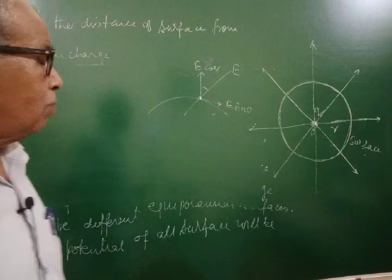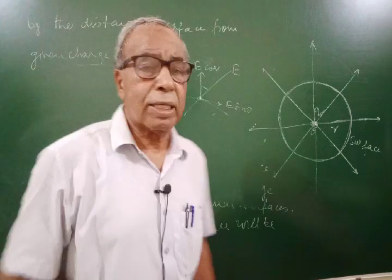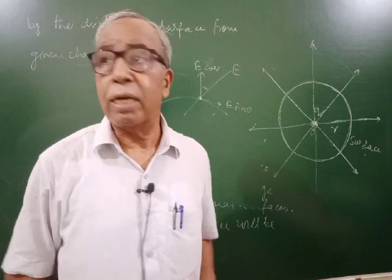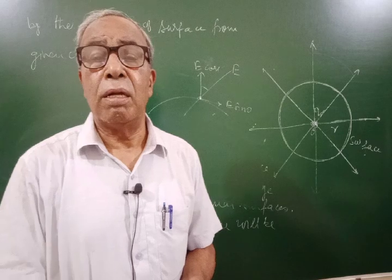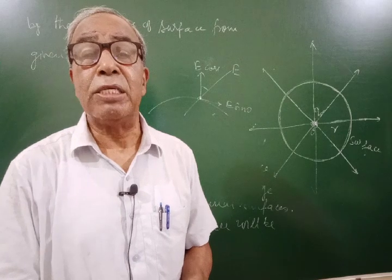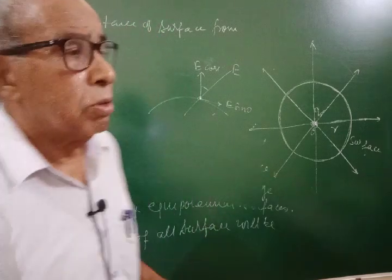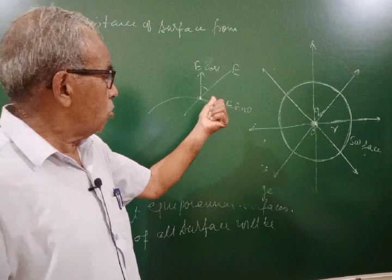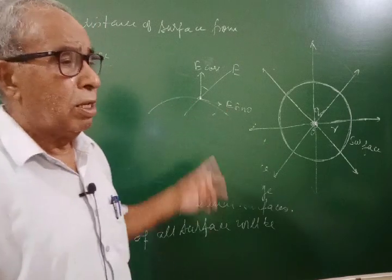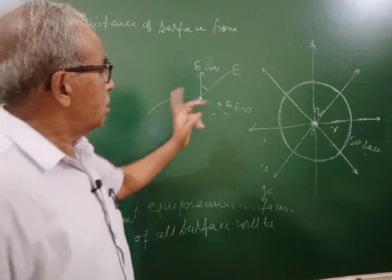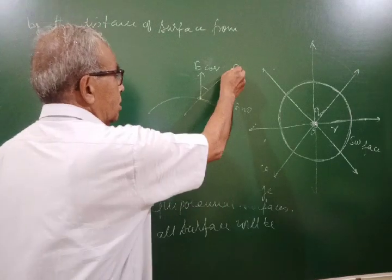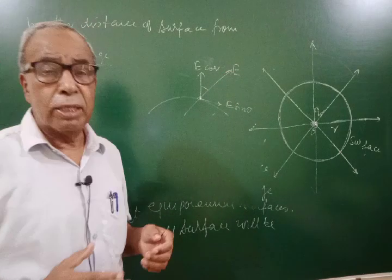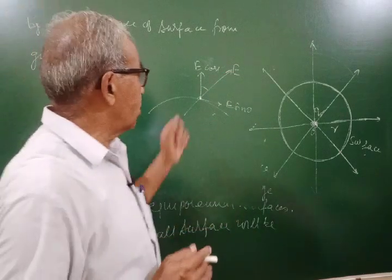But if a charge moves on an equipotential surface, like on any conductor, the charge must remain stationary. So there is no field along the surface, and hence there is no tangential component of electric field along the surface. Therefore, the field is normal to the equipotential surface.